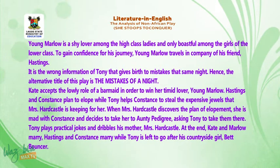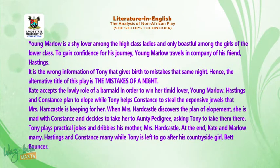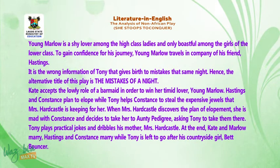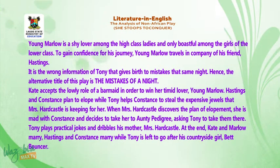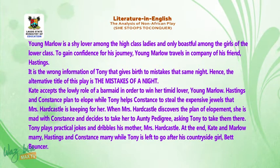Young Marlowe is a shy lover among the high-class ladies but only boasts among girls of the lower class. To gain confidence for his journey, young Marlowe travels in the company of his friend Hastings. It is the wrong information from Tony that gives birth to the mistakes that same night — hence the alternative title of this play is 'The Mistakes of a Night.' Kate accepts the lowly role of a barmaid in order to win the timid lover young Marlowe. Hastings and Constance plan to elope, while Tony helps Constance to steal the expensive jewels that Mrs. Hardcastle is keeping for her.